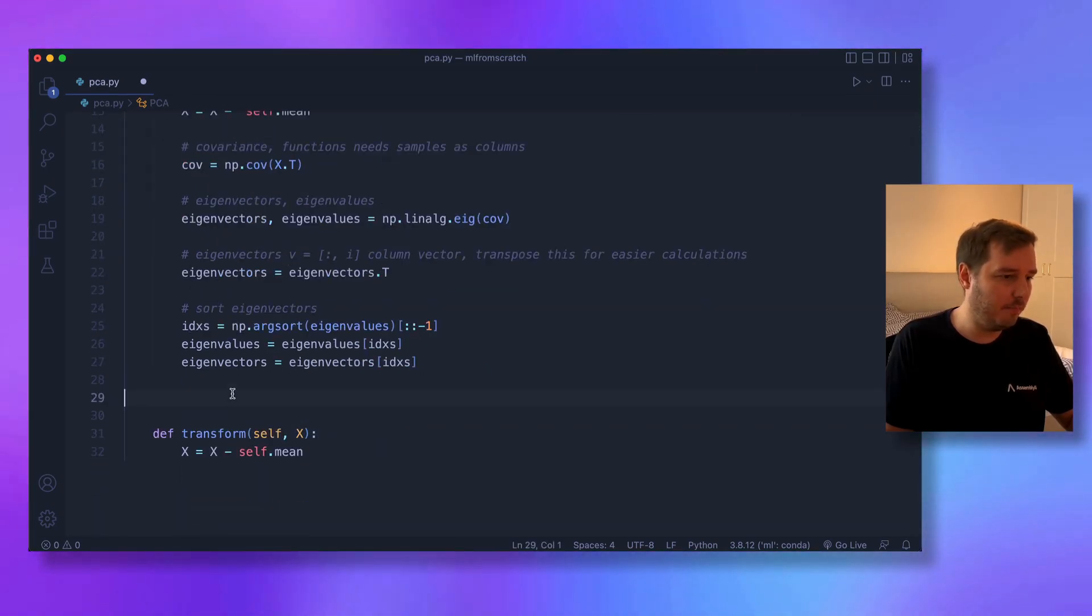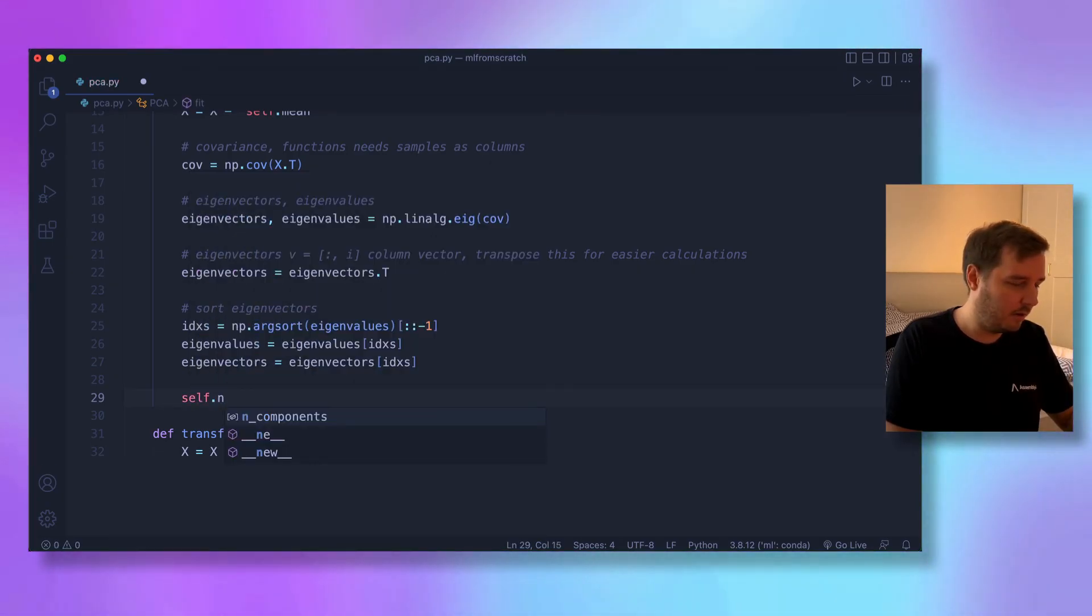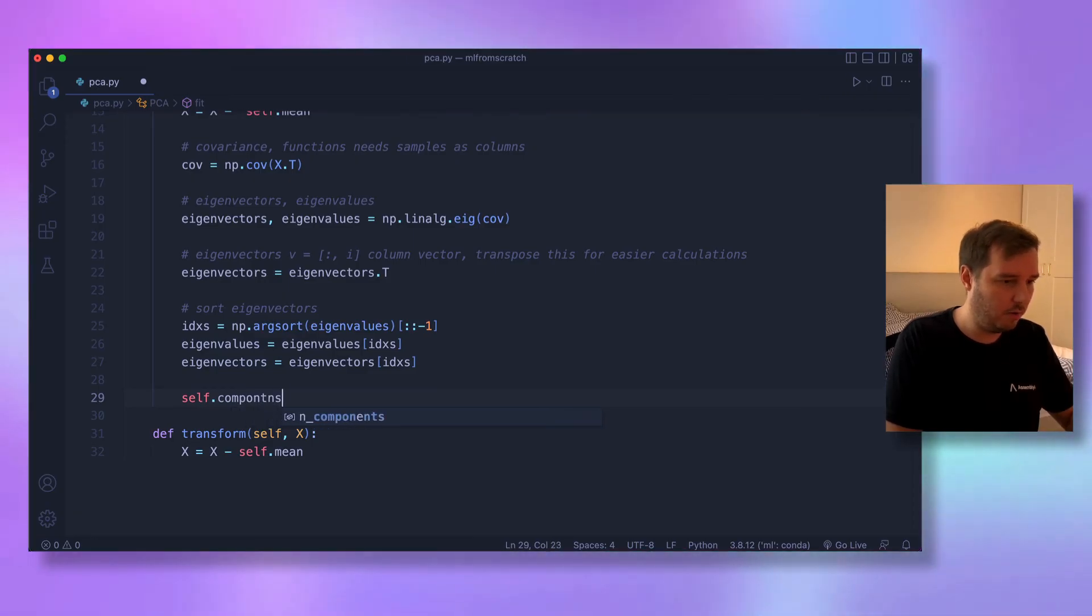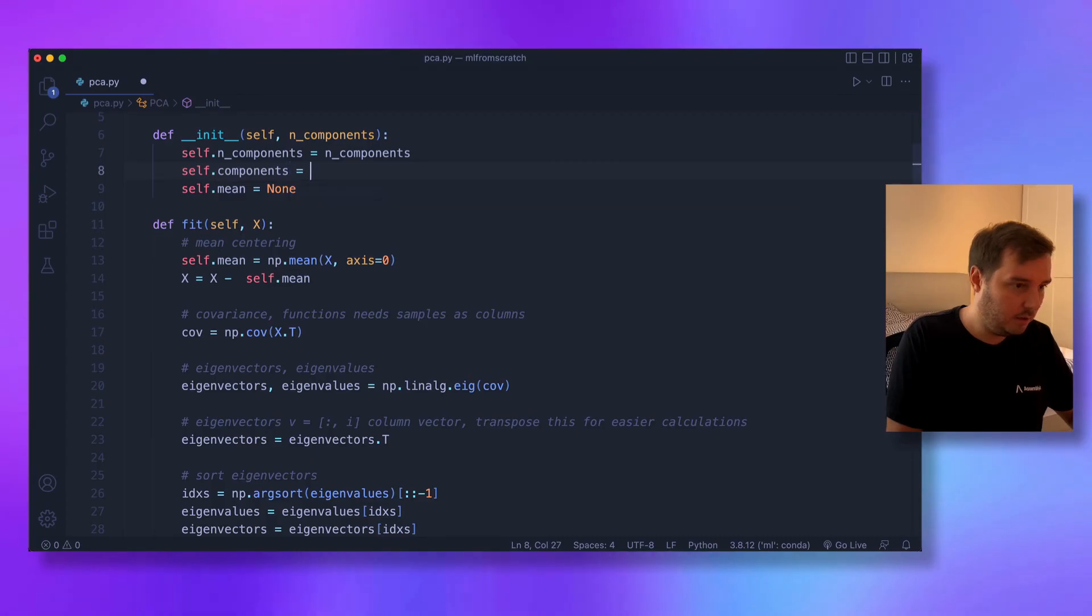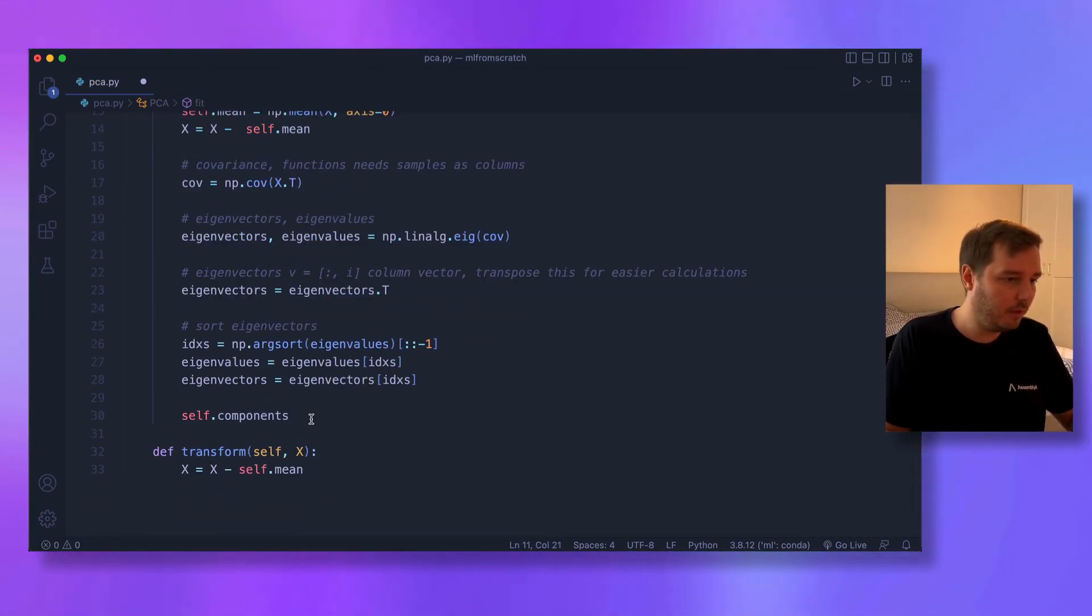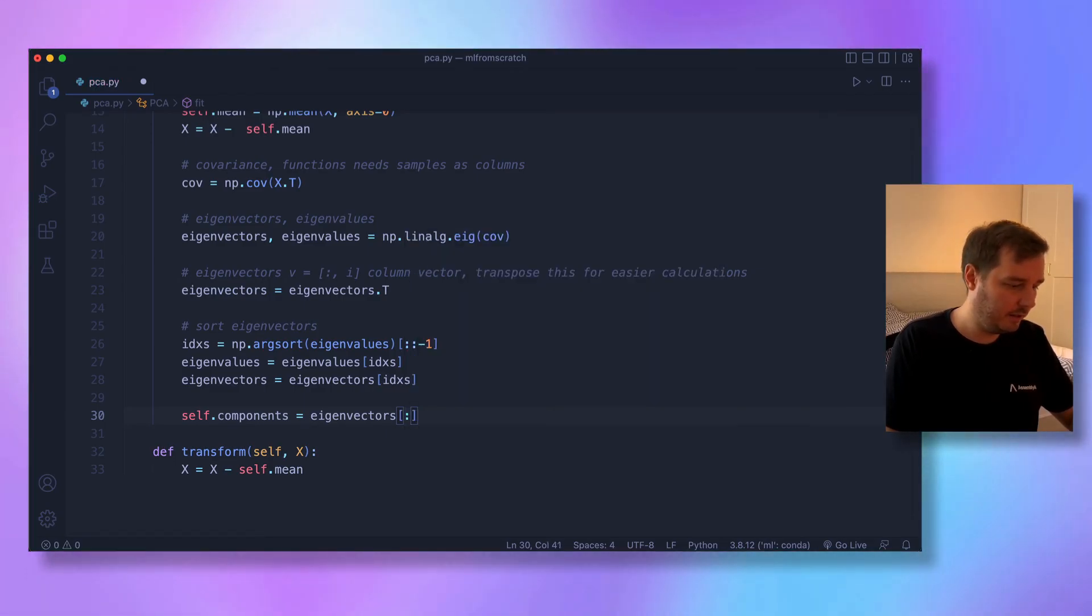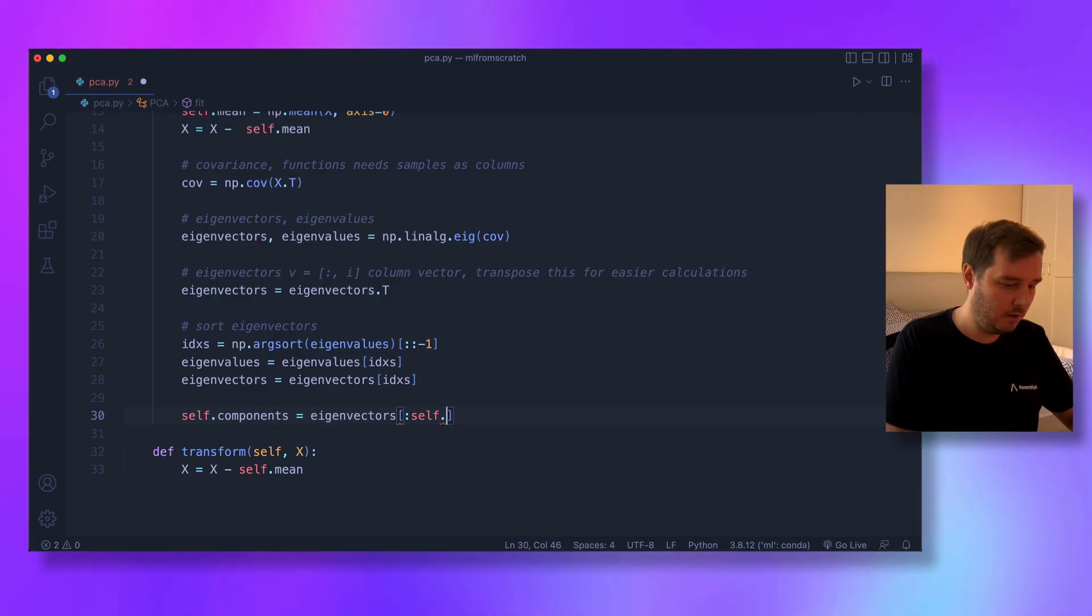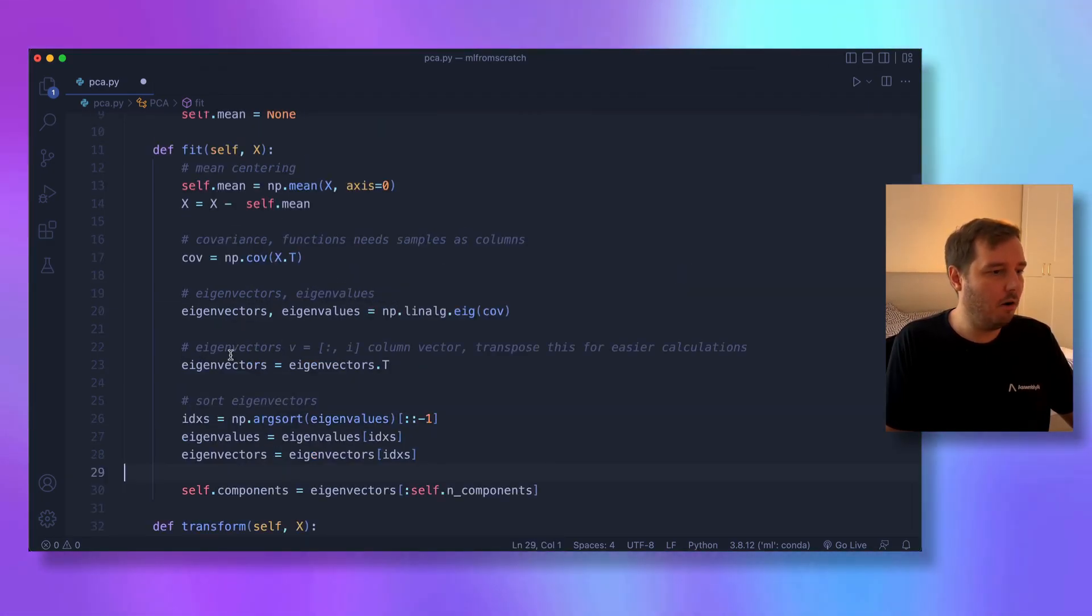Now we only want to save the first number of components, the first k dimensions. We store this: self.components = None in the beginning. Then self.components = eigenvectors[:self.n_components]. So only the first n components. This is easier since we transposed earlier. That's all for the fit method.